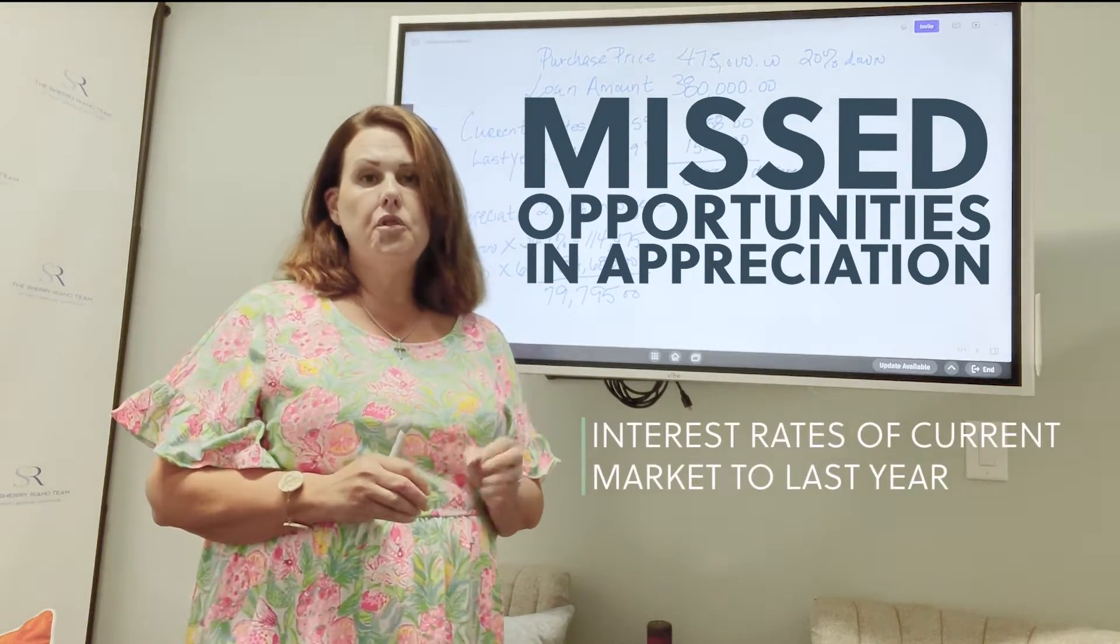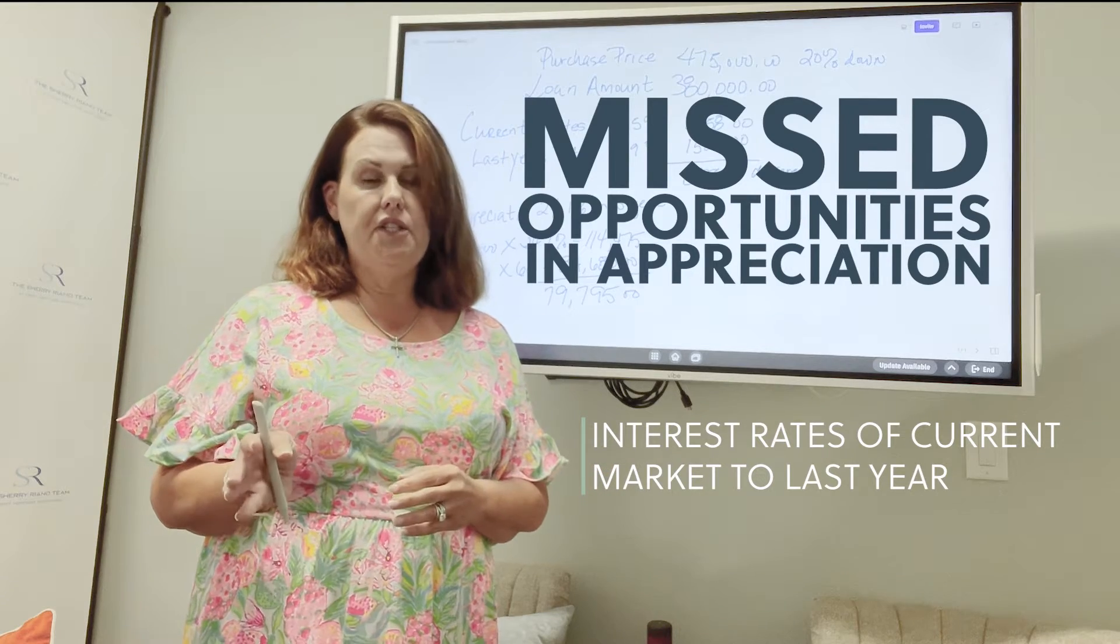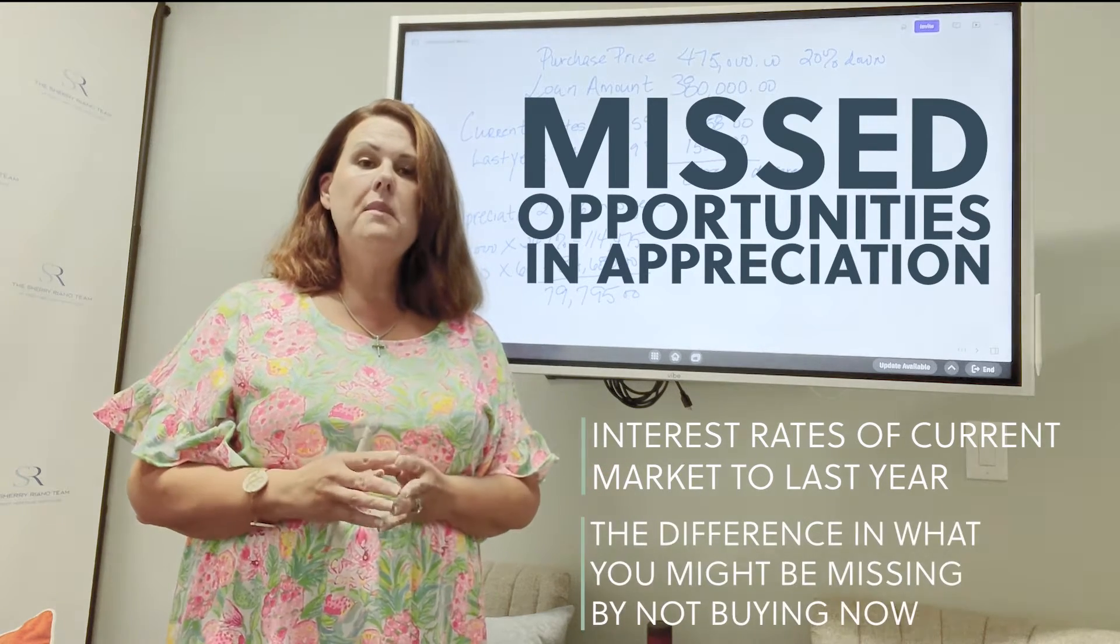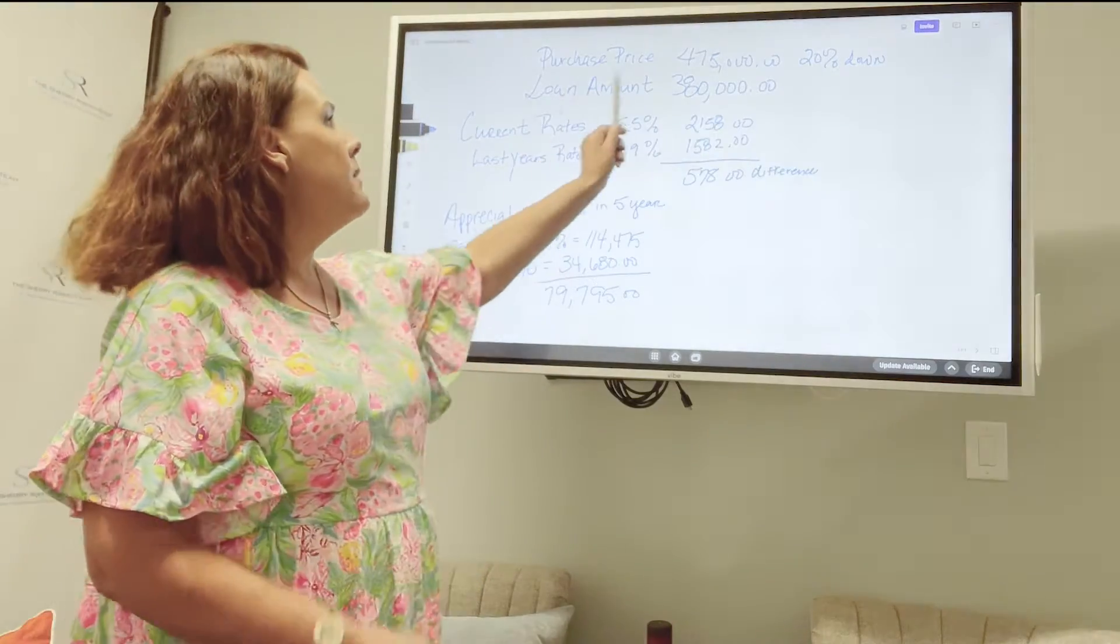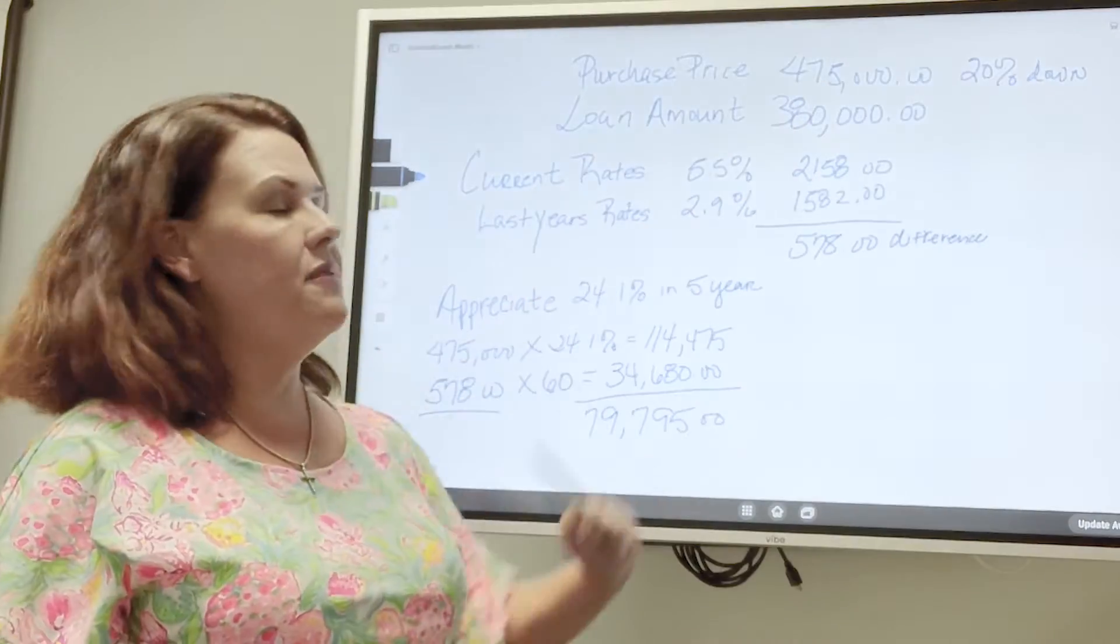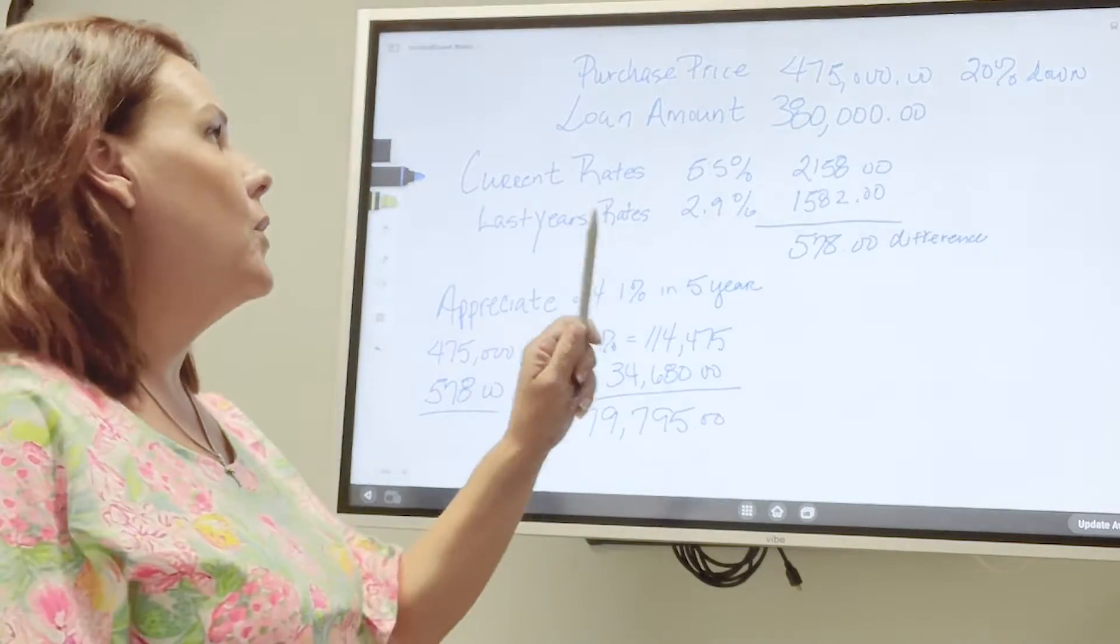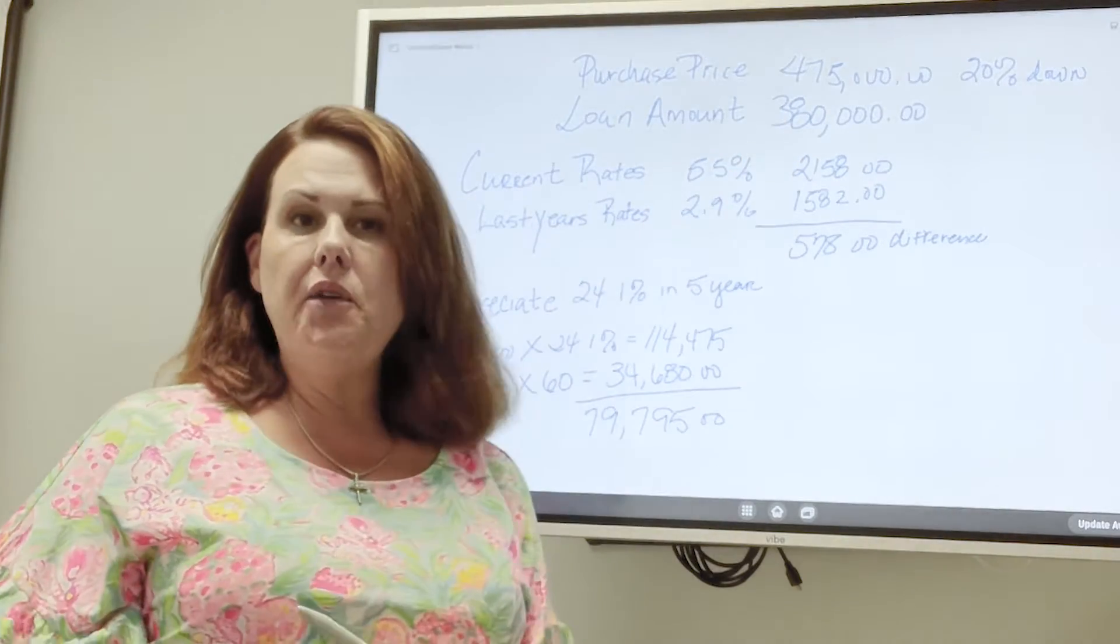I thought I'd go over a few numbers from interest rates of current market to last year and the difference in what you might be missing by not buying now. I'm going to show you a median purchase price in Wake County of $475,000 and putting 20% down, your loan amount is going to be $380,000.